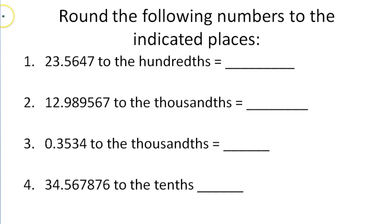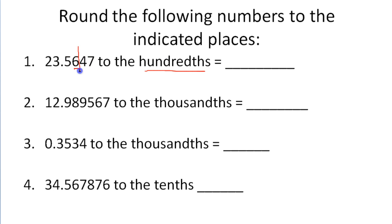It says to round the following numbers to the indicated places. So we've got the number 23.5647, and we want to round this to the hundredths place. The hundredths place is right here — the 6 is occupying the hundredths place. And we want to round to the hundredths place, so what we need to do is look one past the hundredths place.